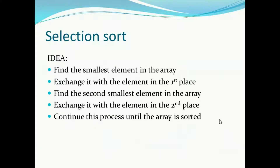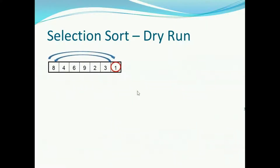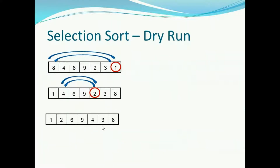So let's try to understand with animation. This is the array and we have to sort these elements through the process of selection sort. Find the smallest element and replace it with the first place element. 1 is the smallest element here, so we will replace it with the first place element. So we get 1 here on the first place.